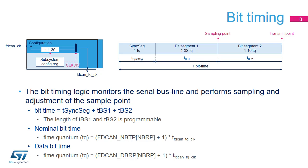The bit timing logic monitors the serial burst line and performs sampling and adjustment of the sample point by synchronizing on the start bit edge and resynchronizing on the following edges. Regarding FDCAN, the data bit time and the nominal bit time have two separate definitions depending on the time quantum value. The time quantum is the basic timing unit equal to TFDCAN_TQCK multiplied by a ratio from 1 to 512 programmed in the FDCAN NBTP register for nominal bit time, and equal to TFDCAN_TQCK multiplied by a ratio from 1 to 32 programmed in the FDCAN DBRP register for data bit time.